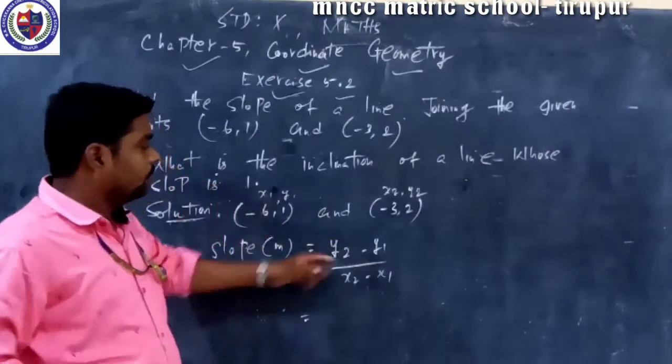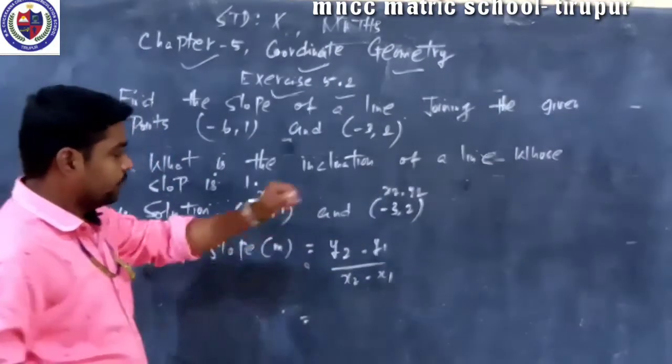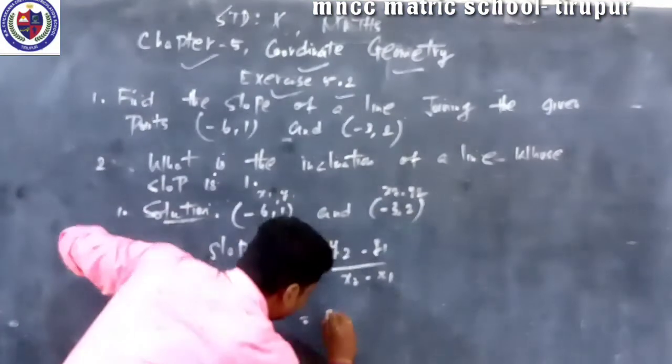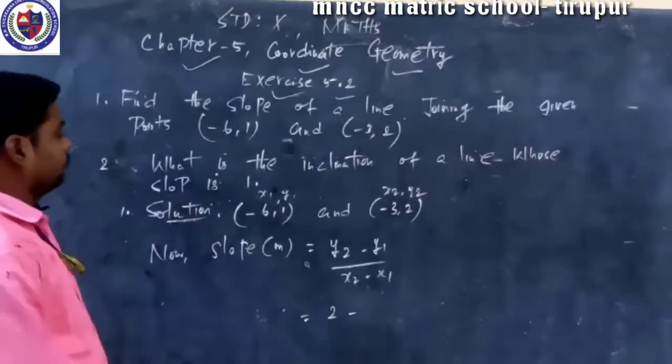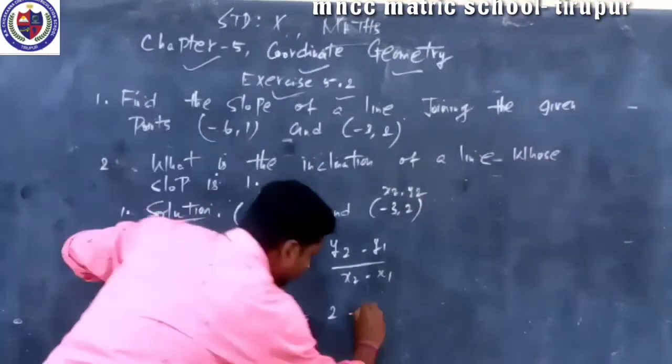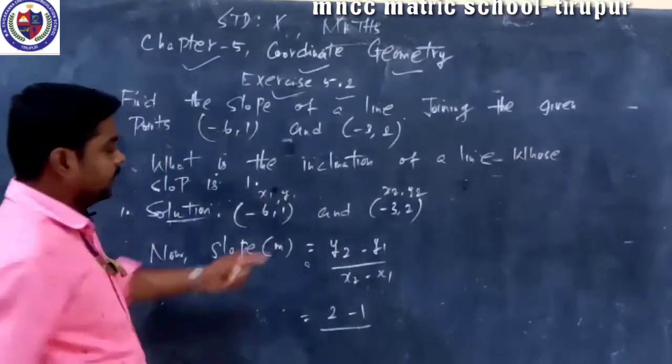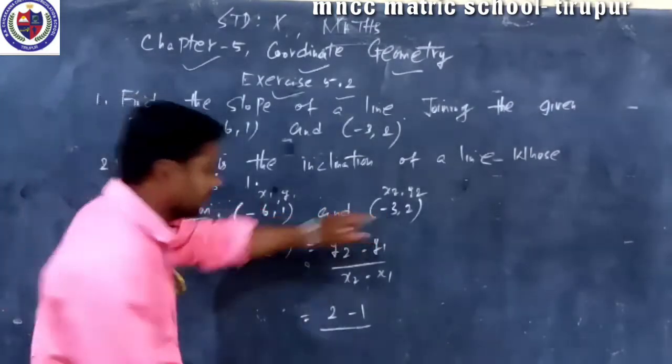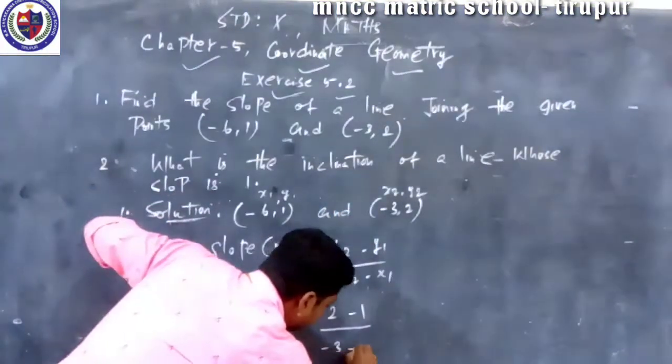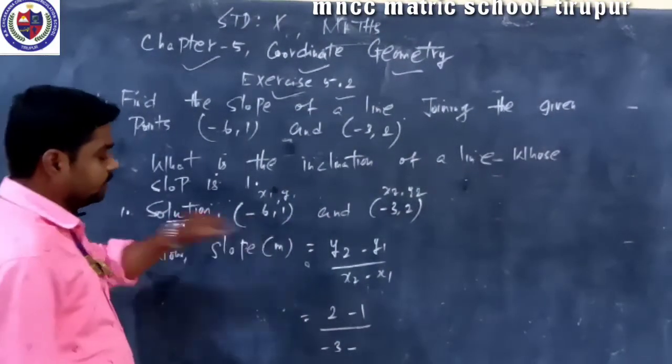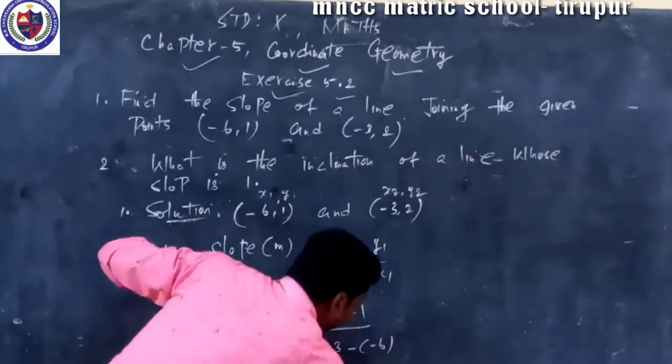The value is related at the substitute form. First, y2 value is 2 minus y1, 1. Second one, x2 minus 3, minus 3. Then formula minus x1, minus 6.